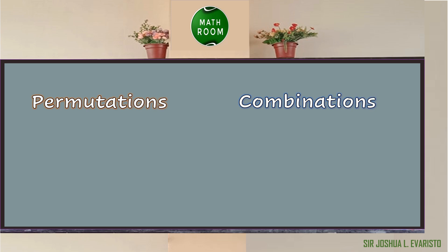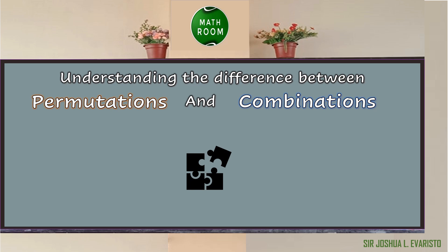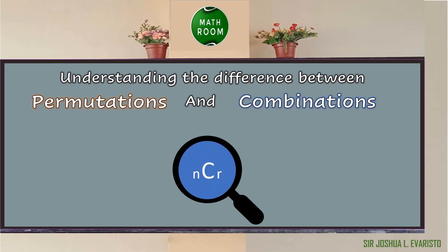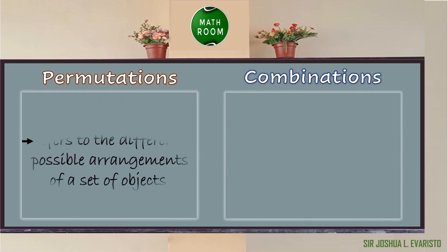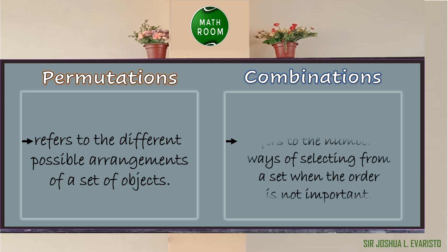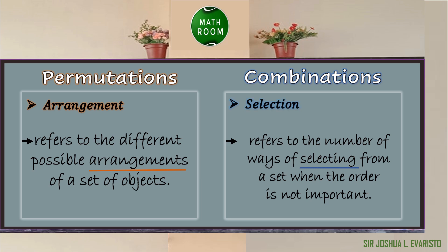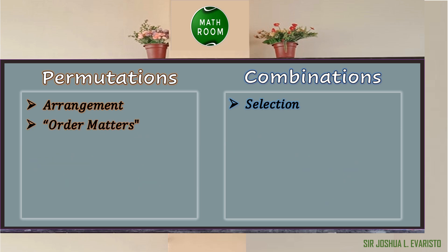Permutations and combinations is a topic full of confusions. The biggest one is understanding the difference between the two — should I solve it using permutation or combination? In lesson number one, we learned that permutations refers to the different possible arrangements of a set of objects. In lesson number three, we learned that combinations refers to the number of ways of selecting from a set when the order is not important. Permutations is all about arrangements, and combinations is all about selection. In permutations, order matters. However, in combinations, order does not matter.